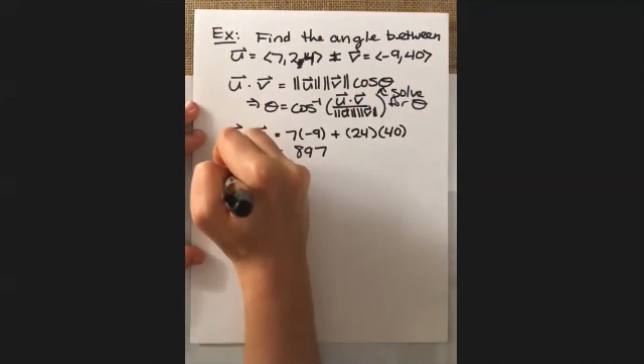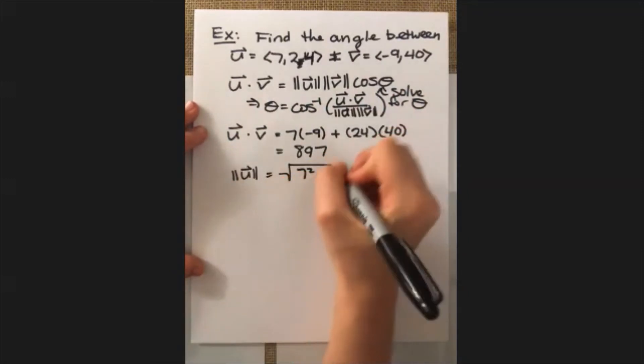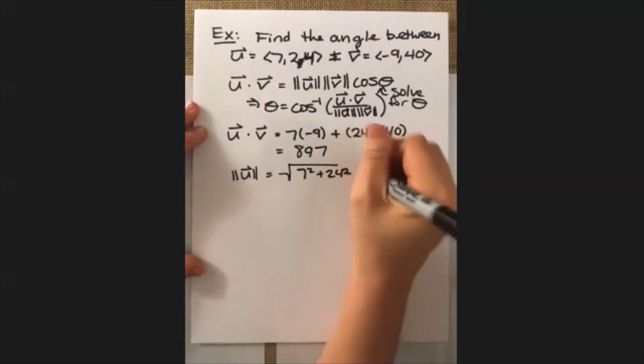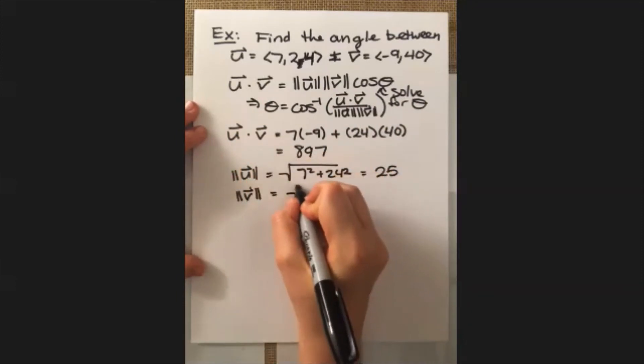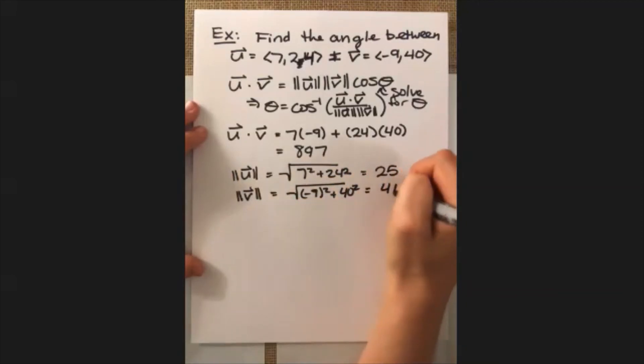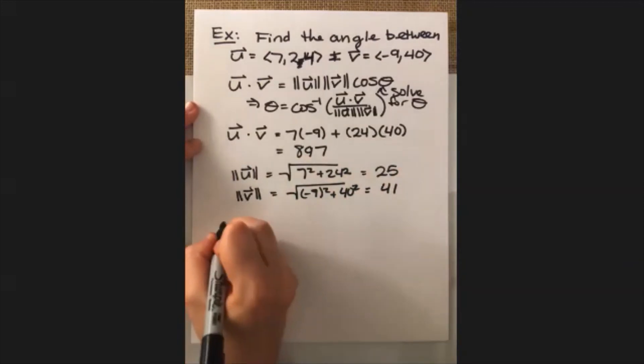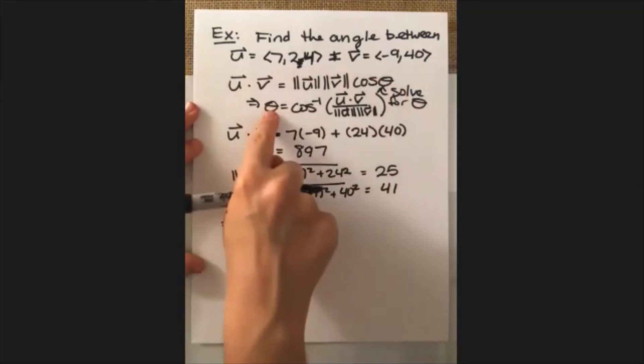Now their length is equal to, for u, equal to square root of 7 squared plus 24 squared. That's just equal to 25. And then the length of v is equal to the square root of -9 squared plus 40 squared. That's just equal to 41.